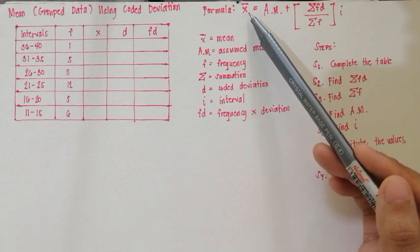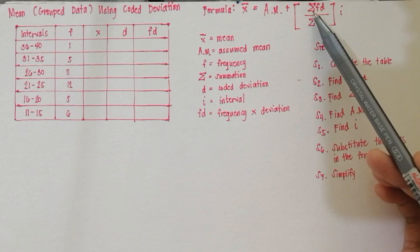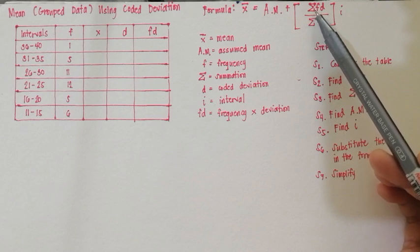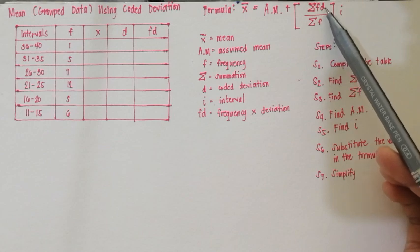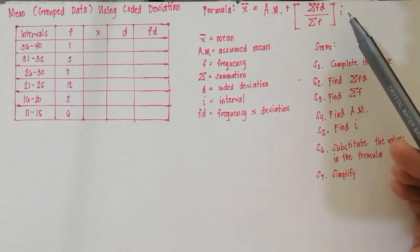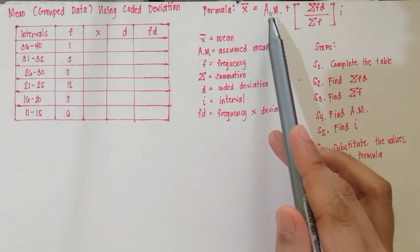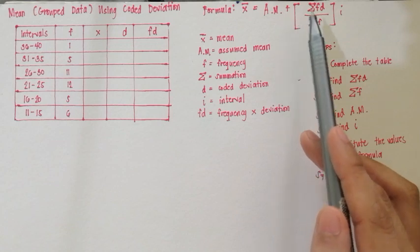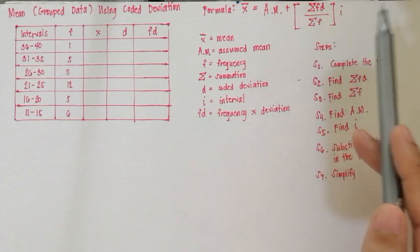This is the symbol for the mean. AM means the assumed mean. This is the symbol for summation. F is the frequency. D is the coded deviation. FD means we multiply frequency and deviation. And I is the interval. You read the formula as: mean is equal to assumed mean plus the quantity summation of FD divided by summation of F, times I.